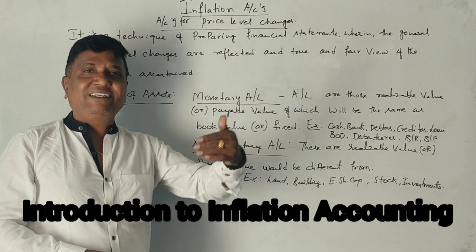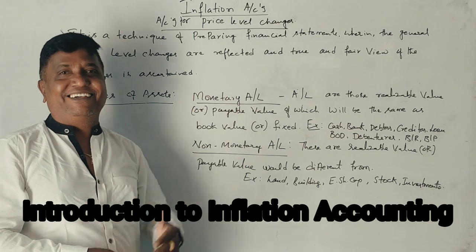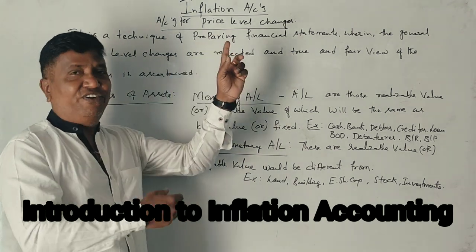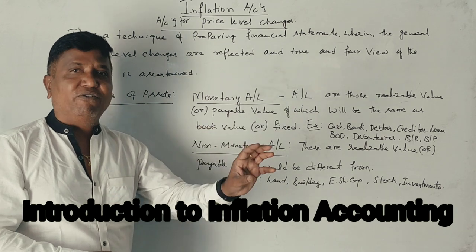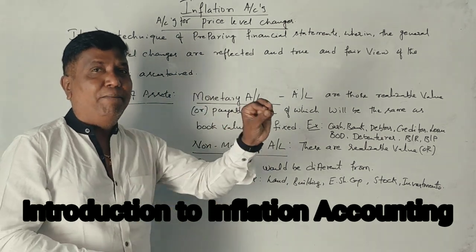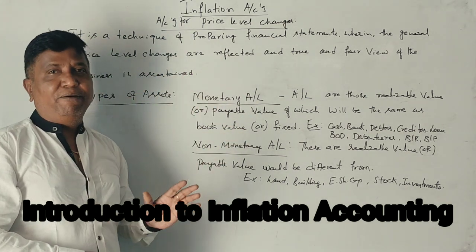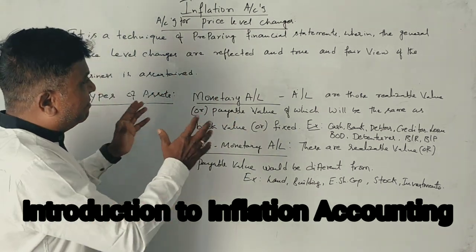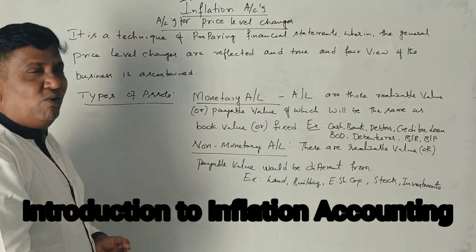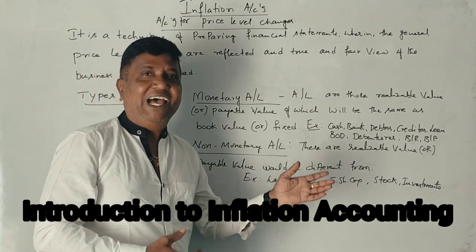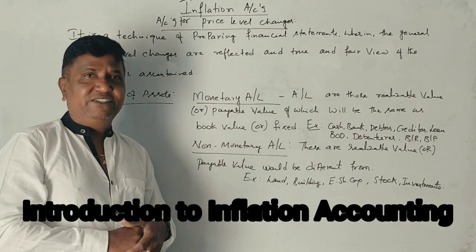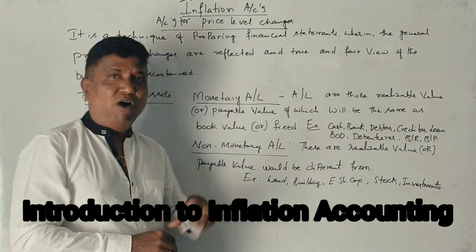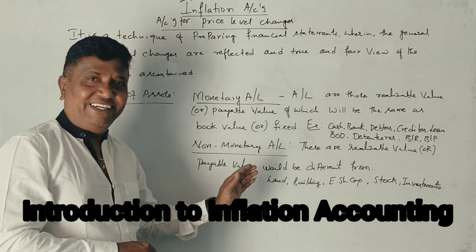Inflation accounting, or accounting for price level changes, is a technique of preparing a financial statement wherein the general price level changes are reflected on all assets and liabilities. Thereby a true and fair view of the business is ascertained. By applying the technique of inflation accounting, we can find out the true and fair view of the financial statements of a business. In a balance sheet, items are classified using terms called monetary items and non-monetary items — monetary assets and liabilities, and non-monetary assets and liabilities.